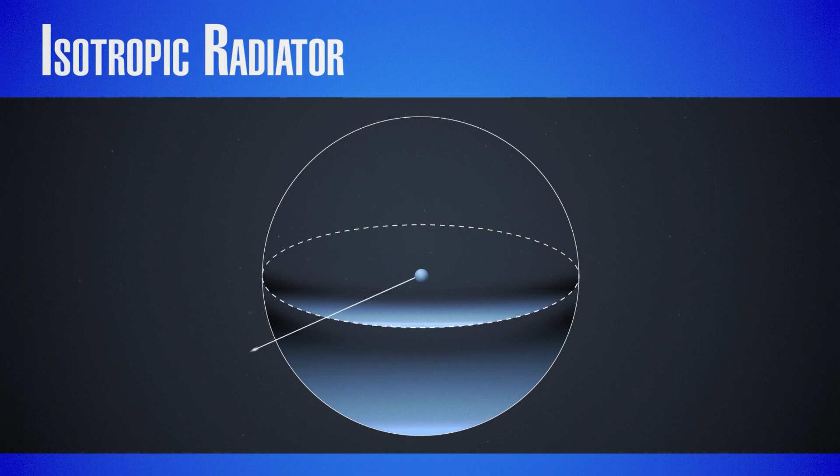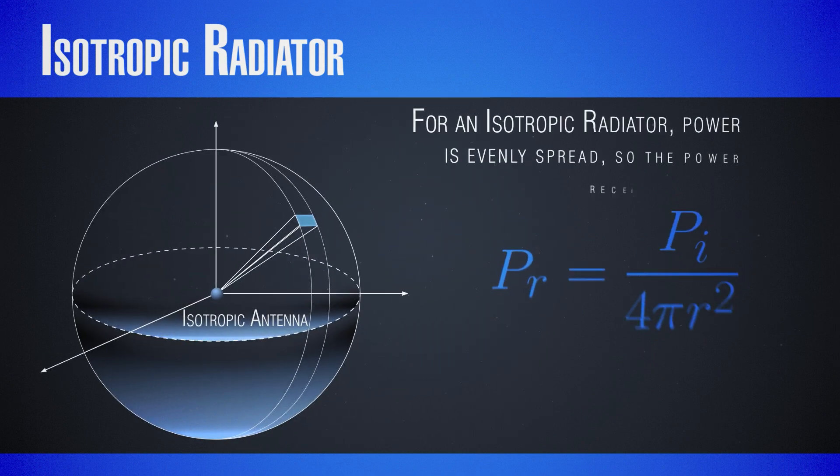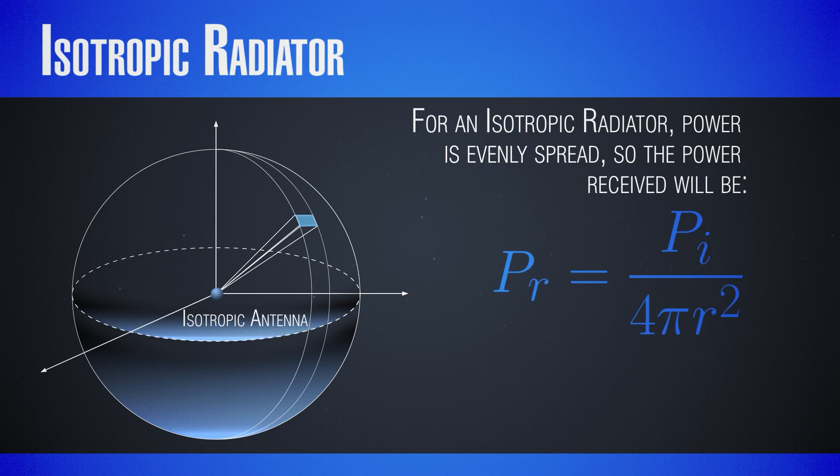Well, if the radiator was perfectly isotropic, the power density at a distance r would simply be the total power of the isotropic radiator divided by the surface of the sphere. But we were speaking about antennas and focusing electromagnetic waves, so real antennas are not isotropic, and this cannot be true.